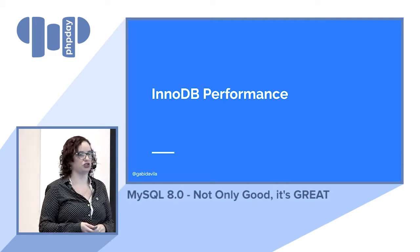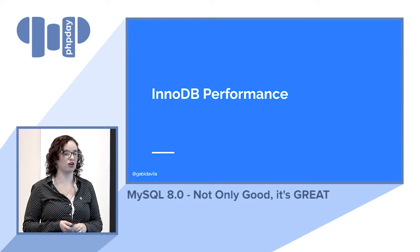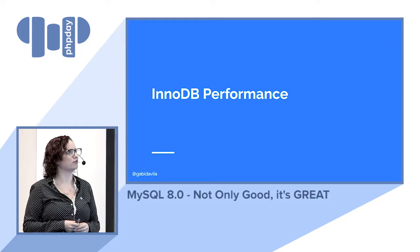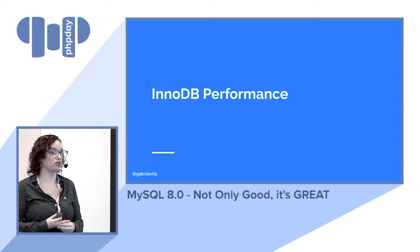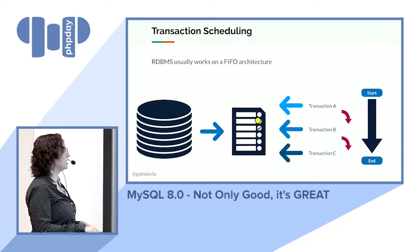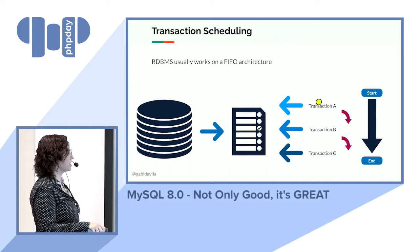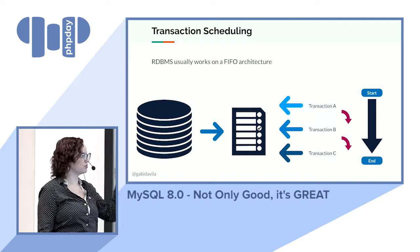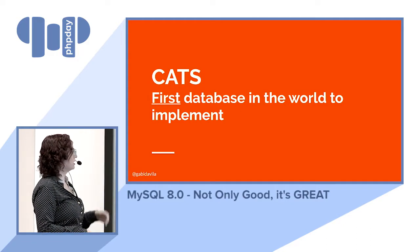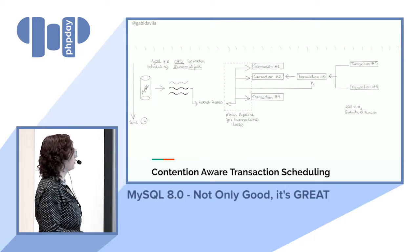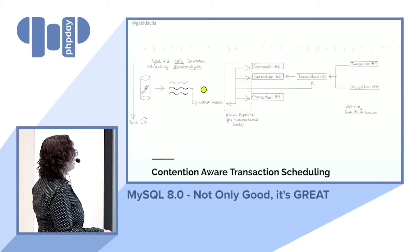On InnoDB performance, there's a new feature called CATS — Contention Aware Transaction Scheduling — which is a new algorithm to deal with high loads. Traditionally, a database uses a queued system: first in, first out — transaction A, then B, then C. With CATS, which MySQL is the first database in the world to implement, transactions can be committed in a different order.